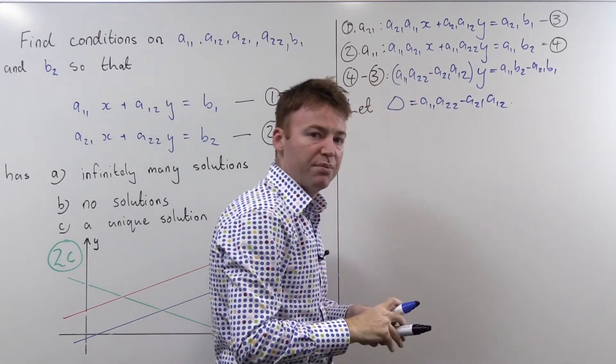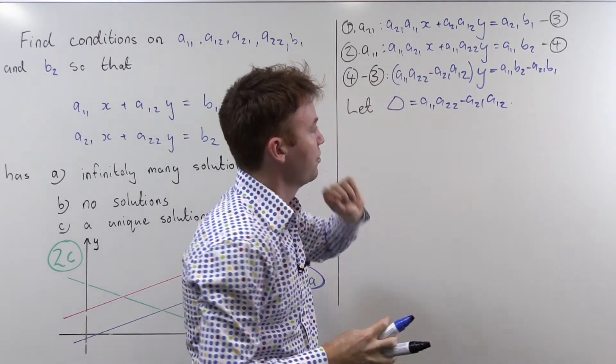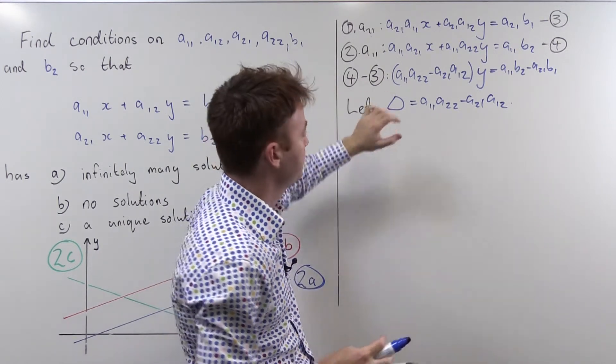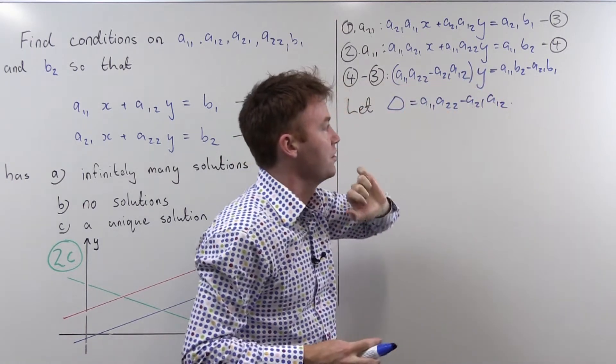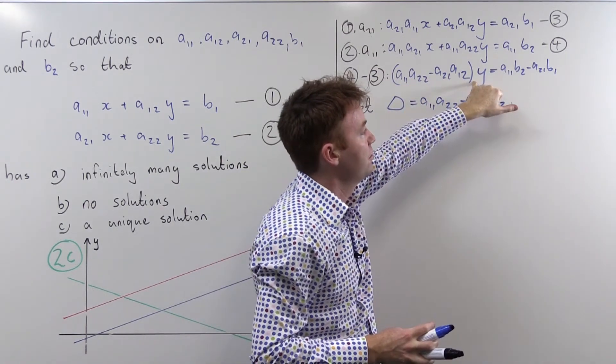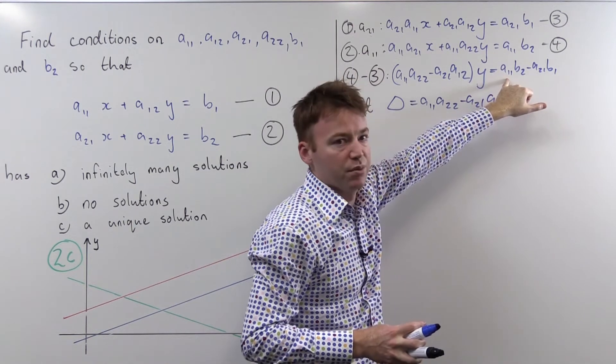And let's see what happens if delta is zero. Well this could lead to trouble. If this is zero then zero times y is zero and zero may or may not be equal to this thing.